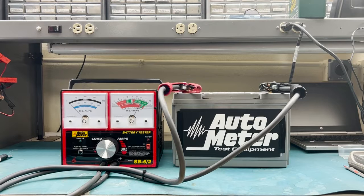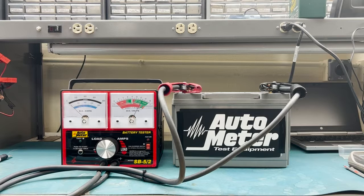Hi folks, today we're going to talk about the Autometer SB5-2 carbon pile tester. This is a carbon pile tester that can test batteries up to 1600 CCA, which means that the SB5 can put a load of up to 800 amps on that battery.